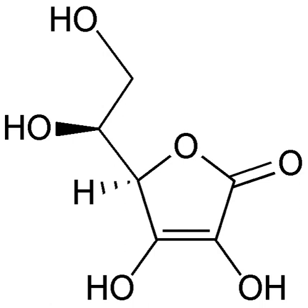Because there is no net change in charge during a redox reaction, the number of electrons in excess in the oxidation reaction must equal the number consumed by the reduction reaction. Elements, even in molecular form, always have an oxidation state of zero. In the first half-reaction, hydrogen is oxidized from an oxidation state of zero to +1. In the second half-reaction, fluorine is reduced from an oxidation state of zero to −1.